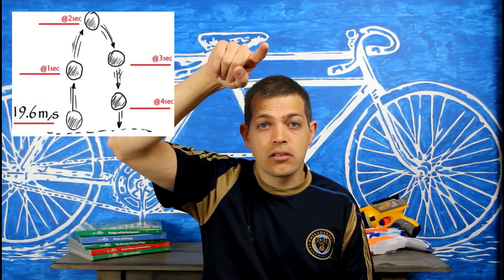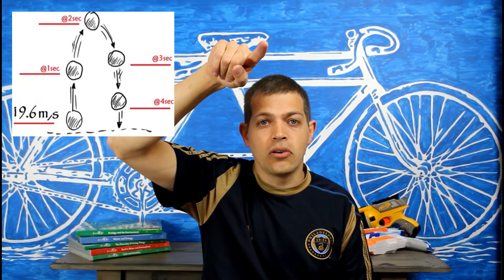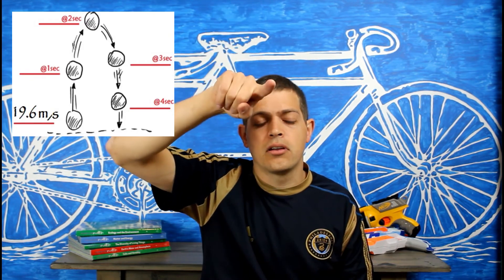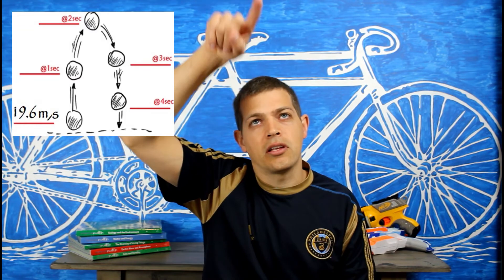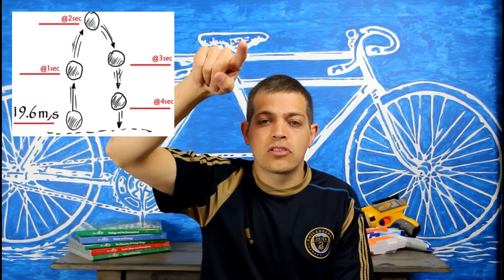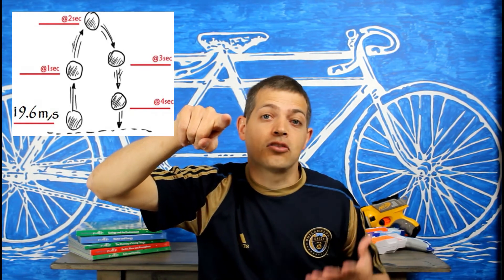At two seconds, it actually hits a peak — an arc — and has zero velocity, because it's not going up or down. We're talking about the pull of gravity in the vertical direction. So at two seconds, it's going zero meters per second. At three, it starts coming back down at 9.8 meters per second, because gravity starts becoming positive. And then at four seconds, 19.6 meters per second.